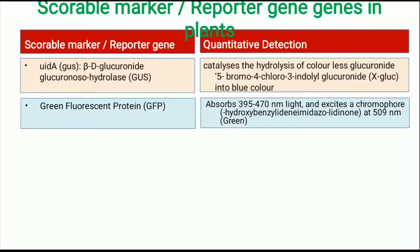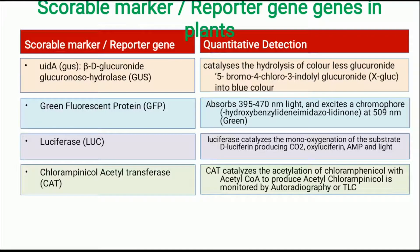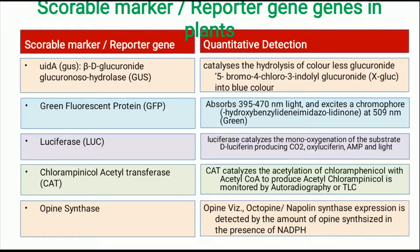GFP expression produces proteins that absorb light at 395 to 470 nanometers and emit at 509 nanometers. Next is luciferase, which catalyzes the conversion of luciferin into oxyluciferin with the production of light. The CAT gene or chloramphenicol acetyltransferase involves acetylation of chloramphenicol, resulting in acetyl-chloramphenicol, which is monitored by autoradiography or thin layer chromatography. Finally, opine synthase genes are also used; the Agrobacterium opine genes such as octopine and nopaline are used and detected by the addition of NADPH.